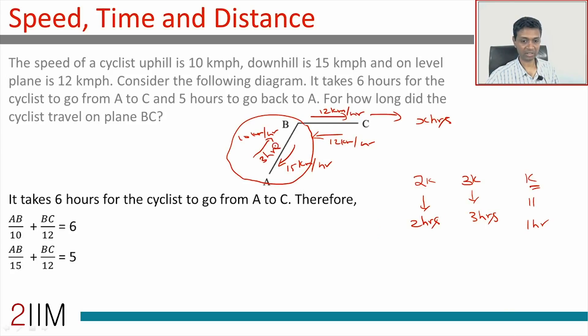This leg takes 3 hours, this leg takes 2 hours, accounting for the difference of 1 hour. This is 3 hours. Total time taken is 6 hours, so this should be 3 hours. How long did the cyclist travel on plane BC?